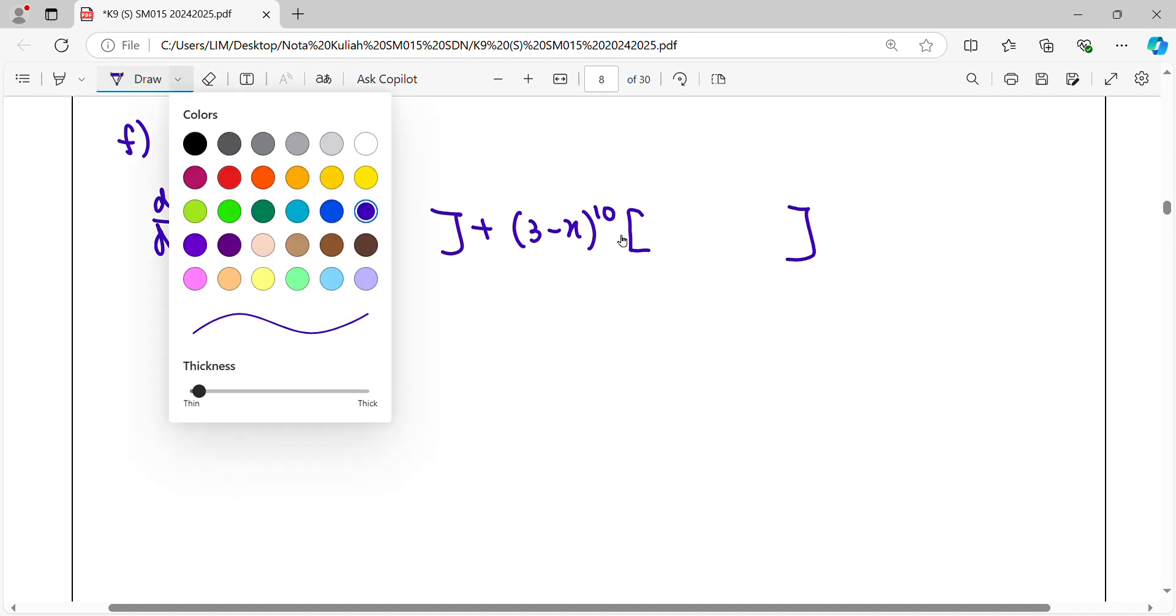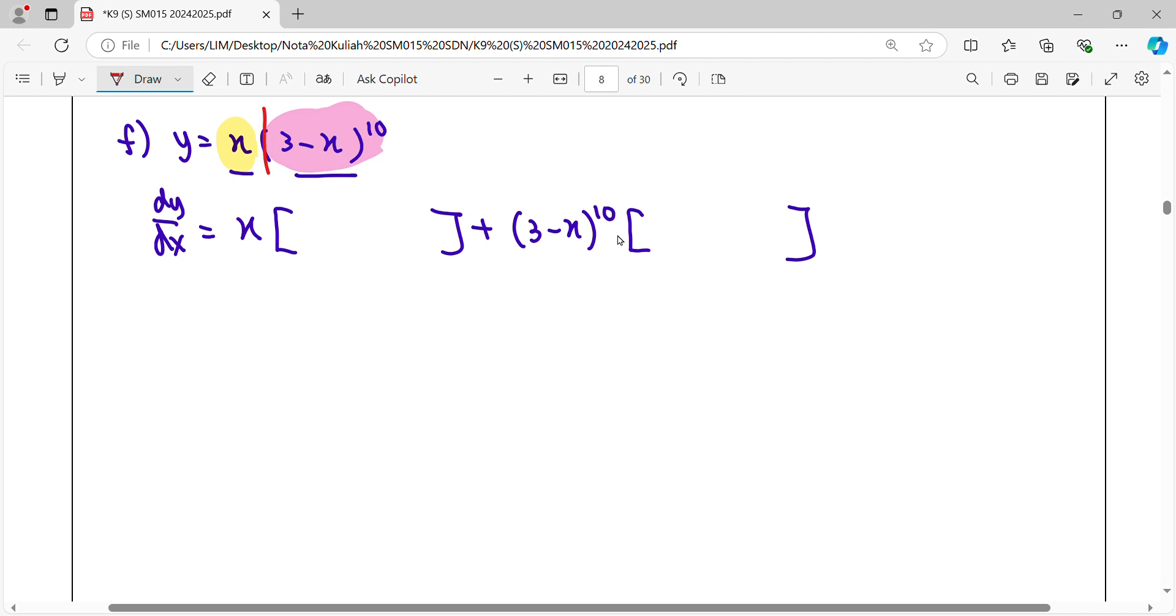Then we fill in the differential. Different shape the function at the back here. Different shape this. This x is in power. So when you want to different shape this, it involves power rule.